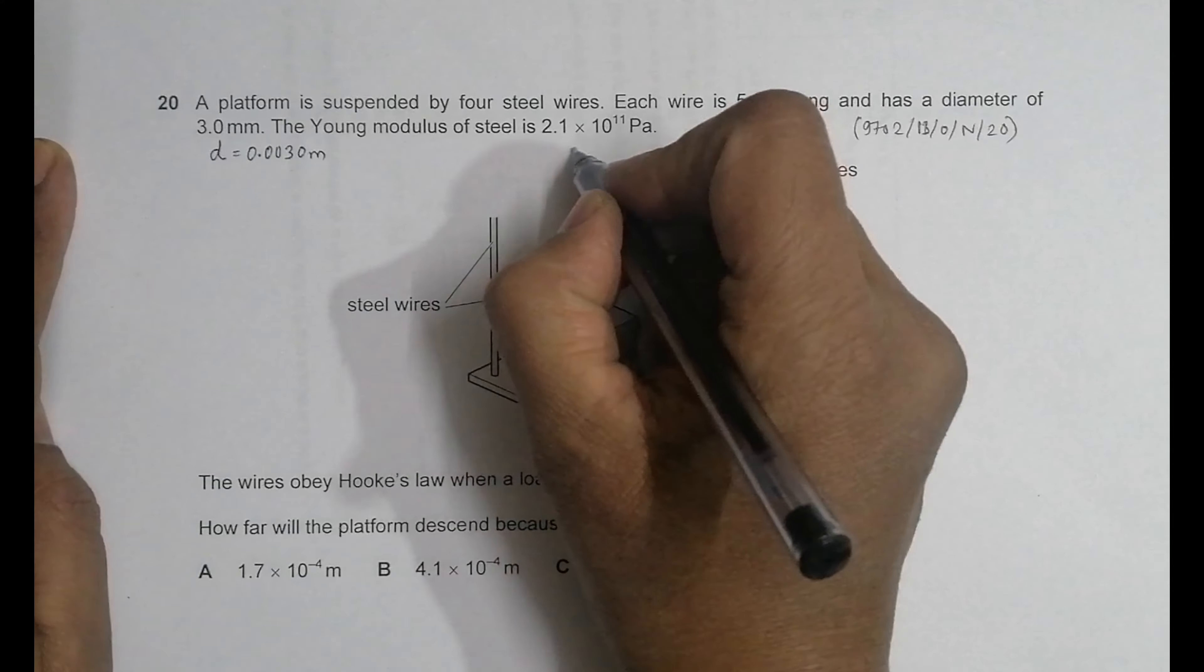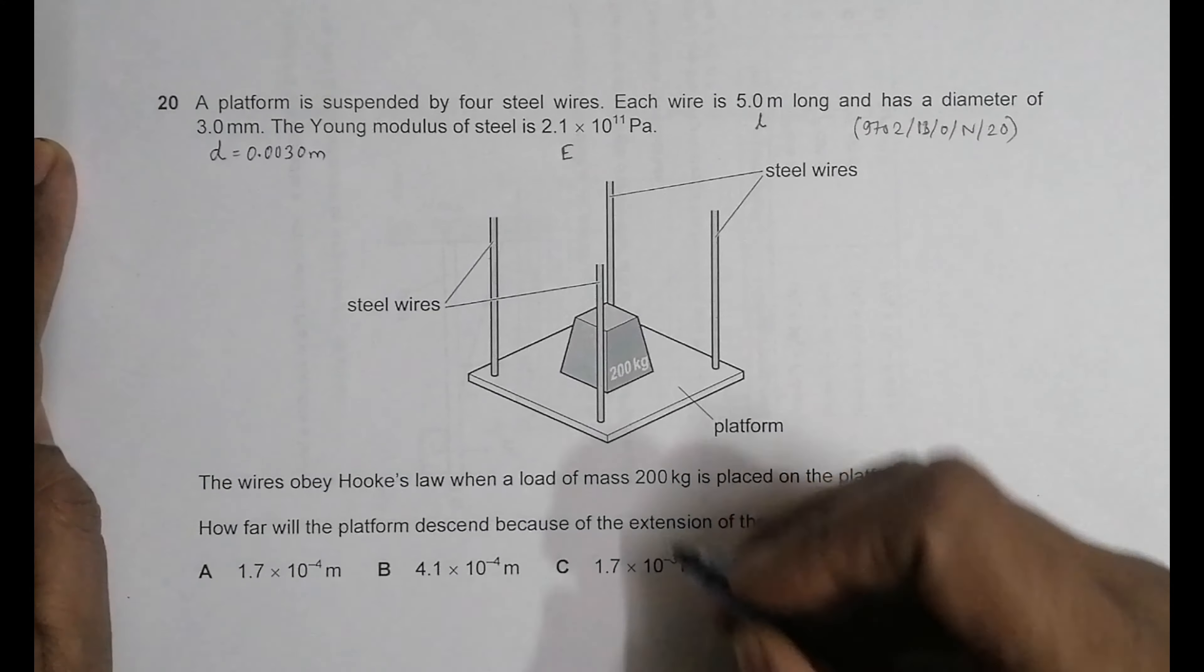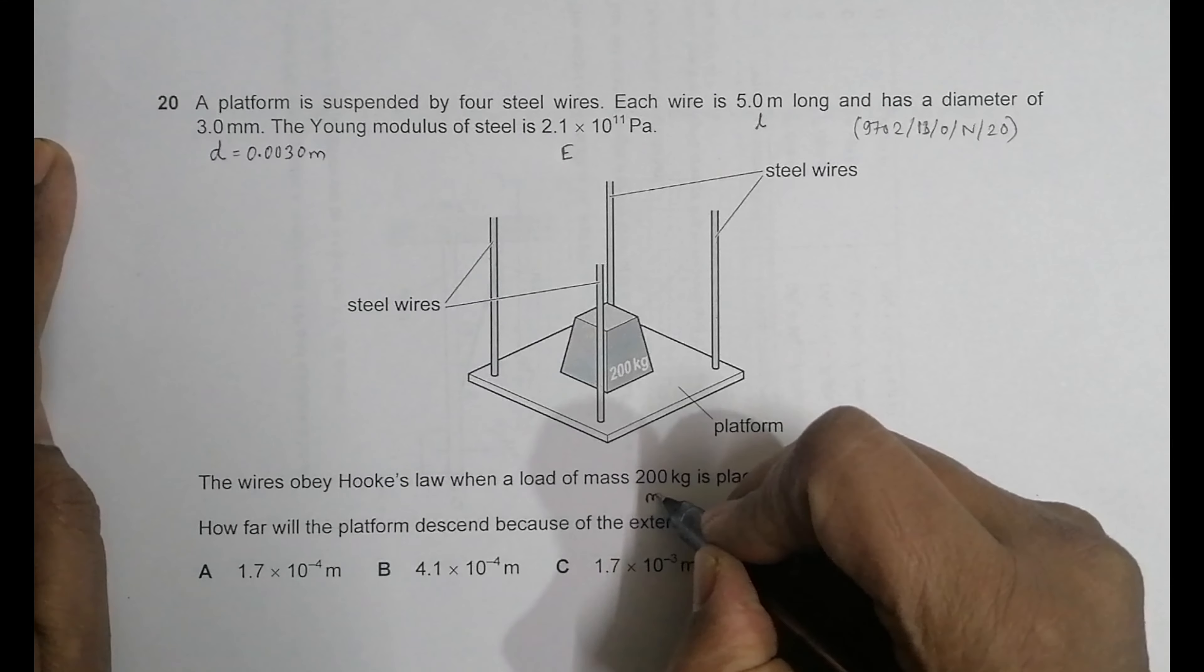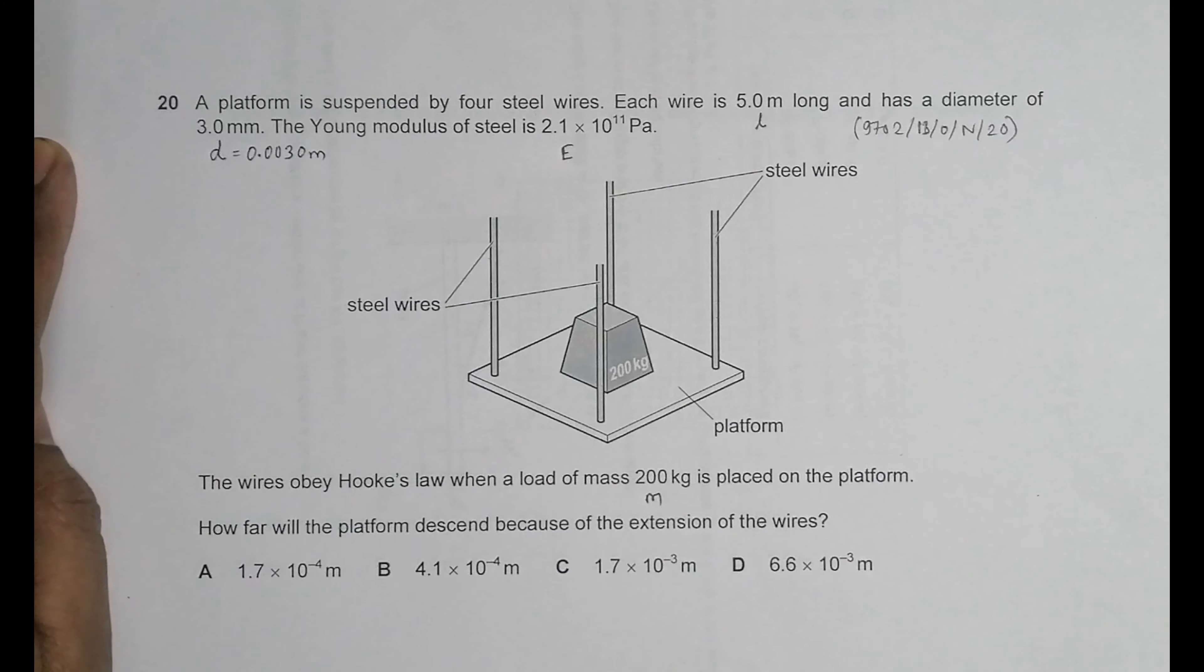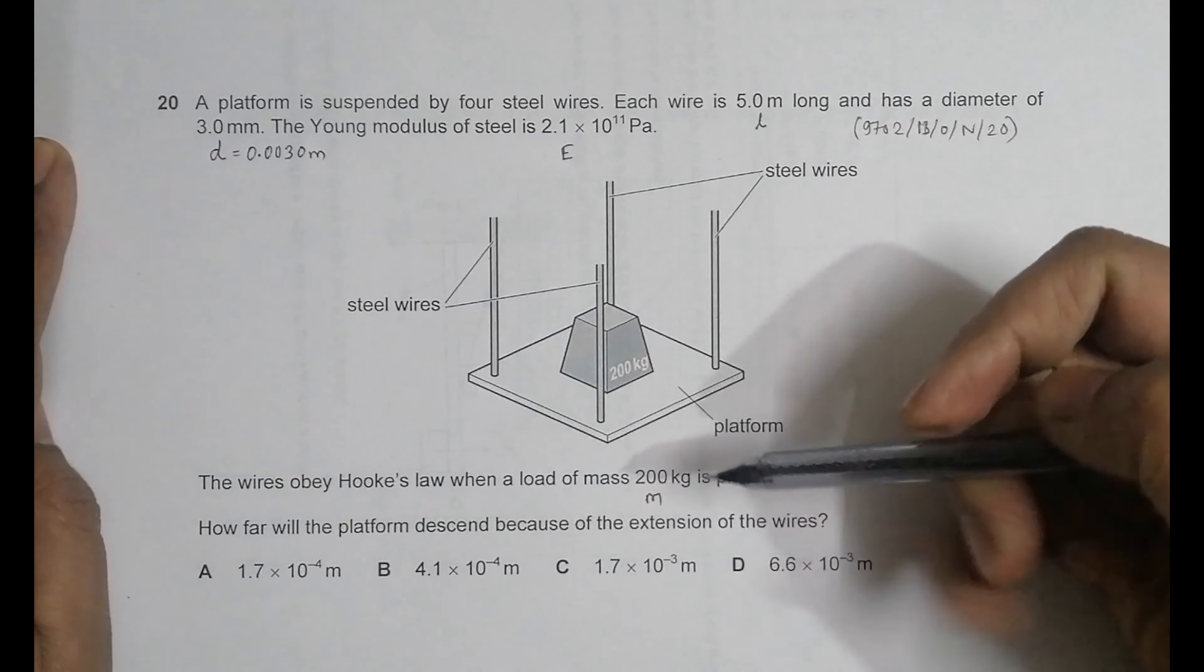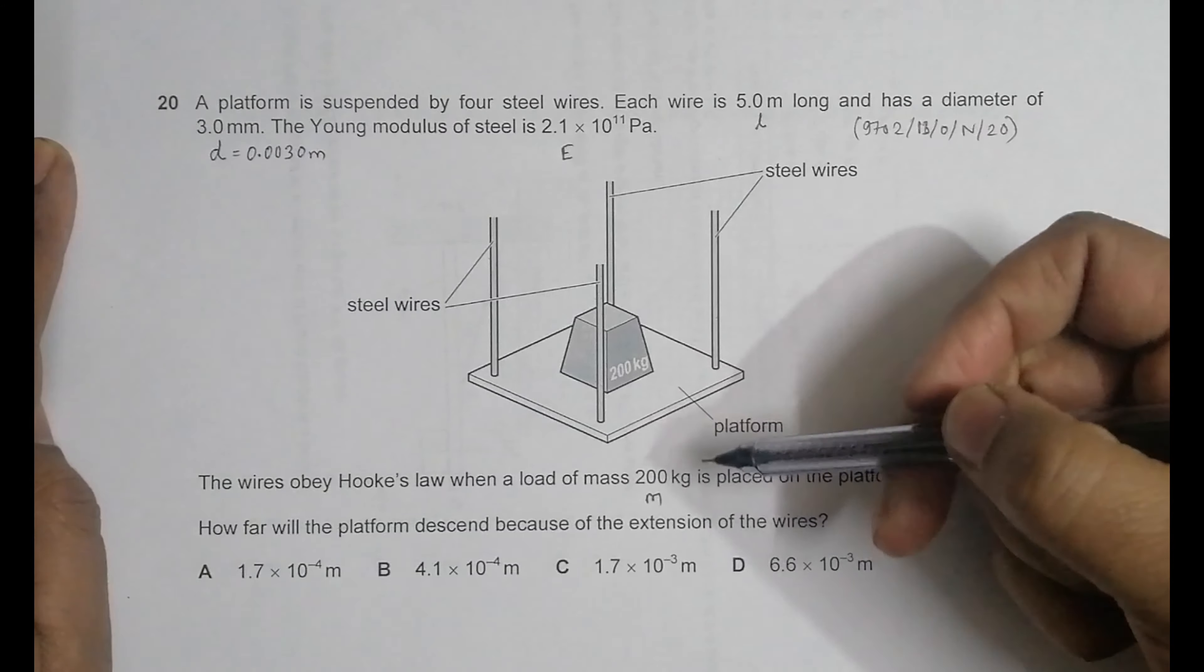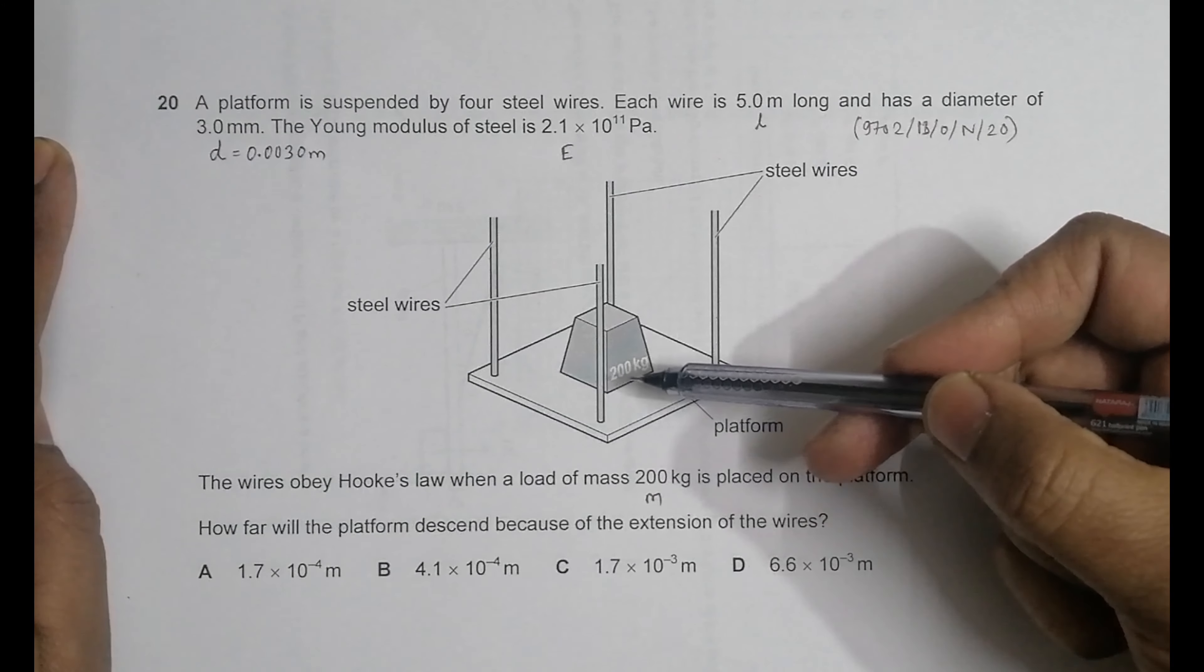The Young modulus of steel is 2.1×10^11 pascals. The wires obey Hooke's law when a load of mass 200 kg is placed on the platform. How far will the platform descend because of the extension of the wires? The descent is equal to the total extension produced.